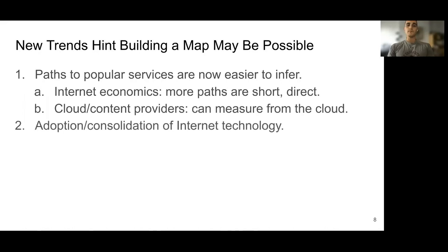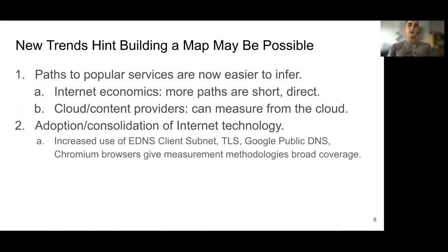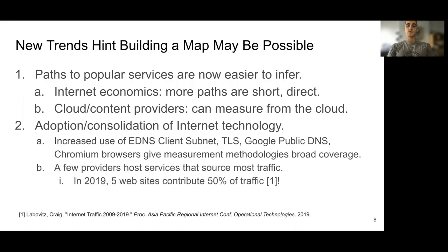Consolidation in the internet also makes mapping services simpler. The increased adoption and consolidation of internet technology — like the eDNS client subnet extension, TLS, Google Public DNS, and Chromium-based browsers — enabled the measurement methods shown on the previous slide. And now, a few providers host services that source most of the traffic, so we can focus on mapping just a few popular providers to get a map that will provide much of the benefit.